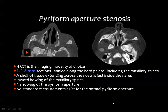The second type is the bony nasal aperture stenosis, where the distance between the nasal processes of the maxilla is abnormally narrow and you get median bowing of these processes encroaching on the nasal aperture. Normally, there is a good distance between both, and the processes are usually parallel to each other.